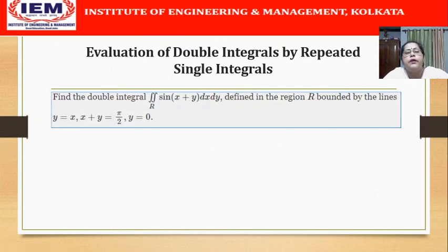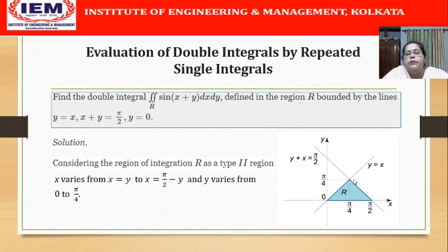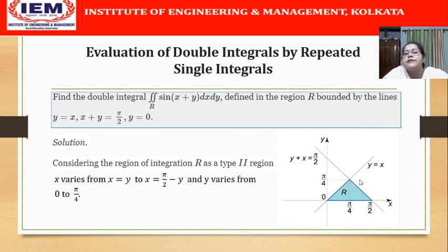Next problem: Find the double integral of sin(x + y) dx dy over the region R bounded by the lines y = x, x + y = π/2, and y = 0. This region is a triangle. The line y = x passes through the origin; x + y = π/2 cuts the x-axis at (π/2, 0); and y = 0 is the x-axis. Can we treat this as a Type 1 region? If we vary y first, the lower curve is y = 0. However there is a problem with the upper curve: for x in [0, π/4] a vertical strip reaches y = x, but for x in [π/4, π/2] the vertical strip reaches the boundary x + y = π/2.